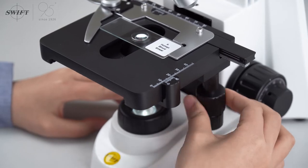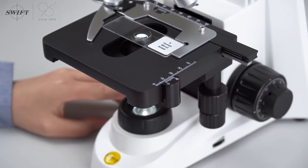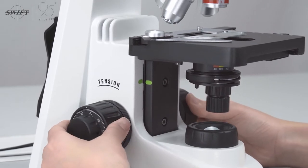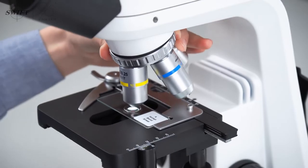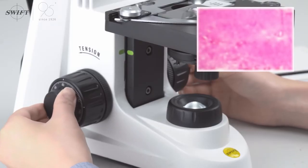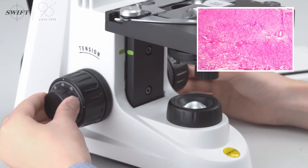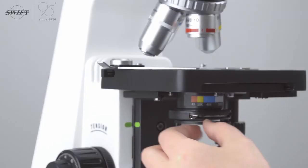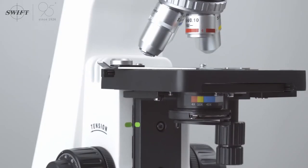Move the target area to be observed to the center of the field of view. The relative parfocal position can be quickly found through the parfocal indicator line. Use the 4x low magnification objective to find the image and adjust it to be clearer, and place the aperture diaphragm in the corresponding color-coded position.